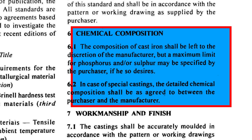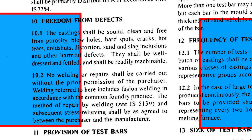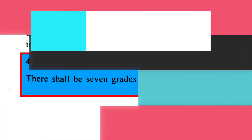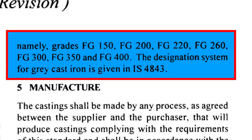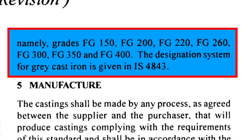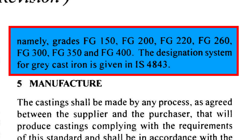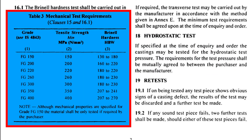This standard ensures it has the right mix of elements, the correct microstructure, the needed strength, and is free from porosity. IS-210 specifies 7 grades designated as FG-XXX, where FG represents Grey Iron and XXX indicates the minimum tensile strength of that grade in MPa. For example, FG-150 refers to Grey Cast Iron with a minimum tensile strength of 150 MPa.